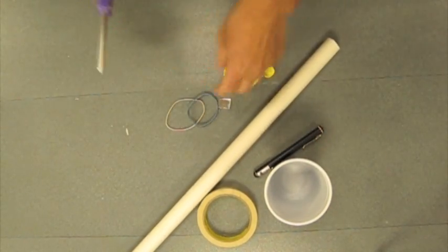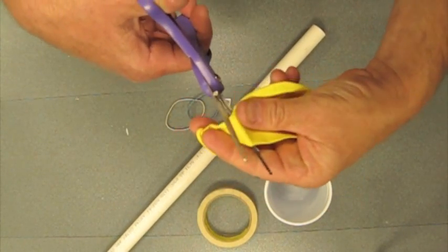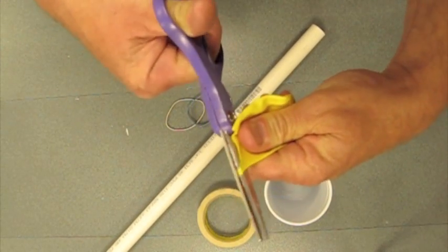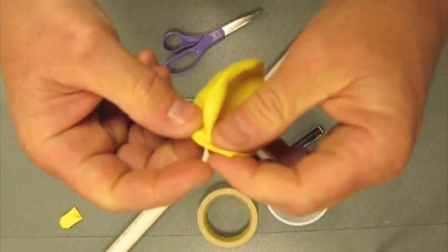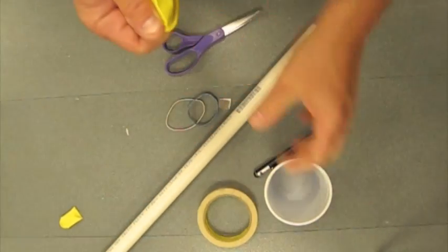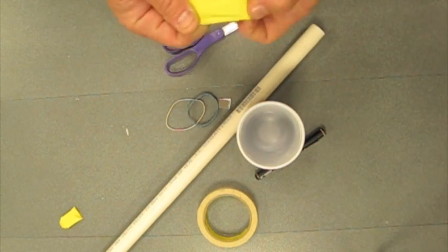What I do is I take the balloon, cut off a portion of it so that you have the membrane part. You're going to stretch this over your cup or can. And like I said, I like to use a plastic cup.